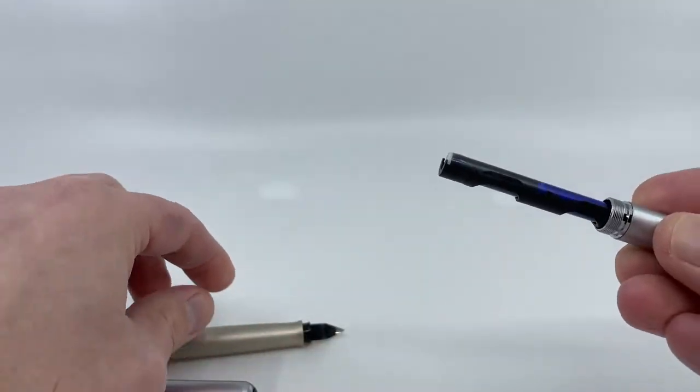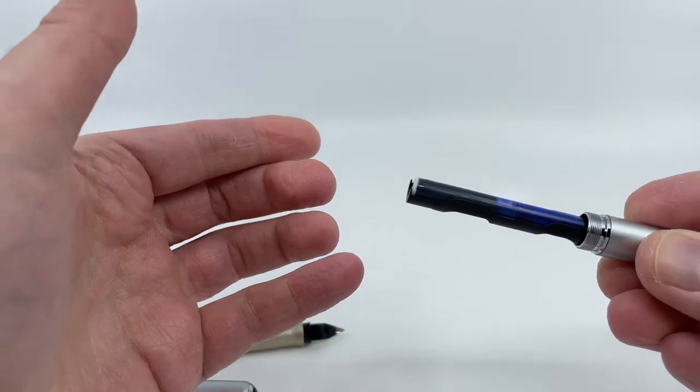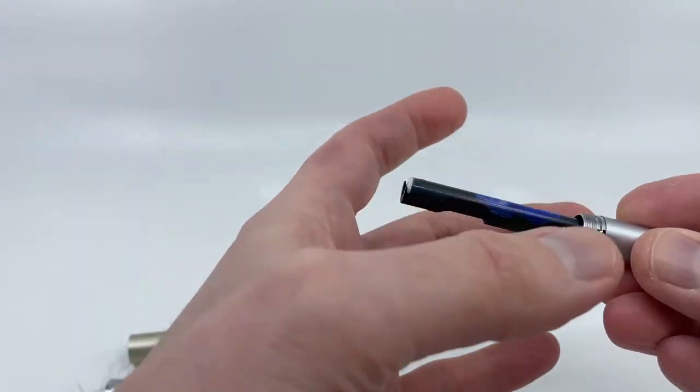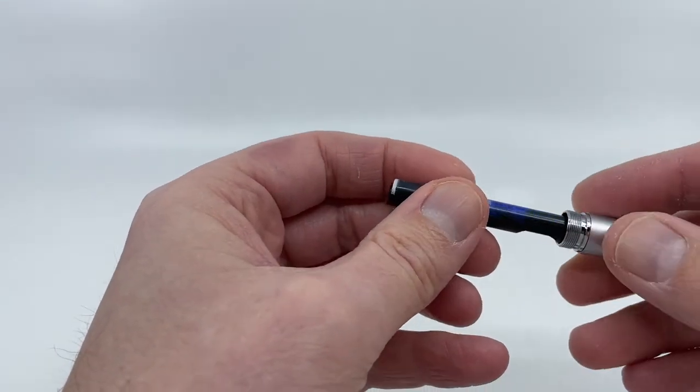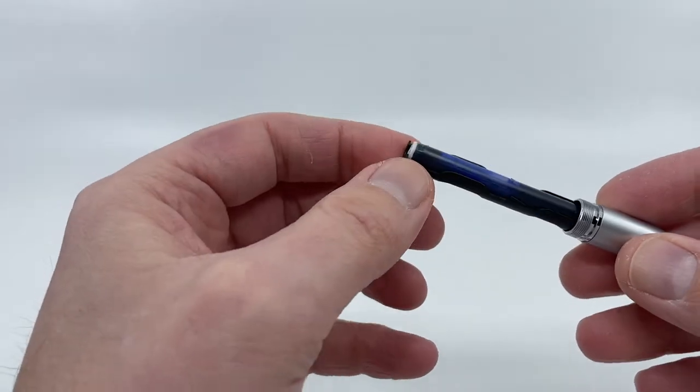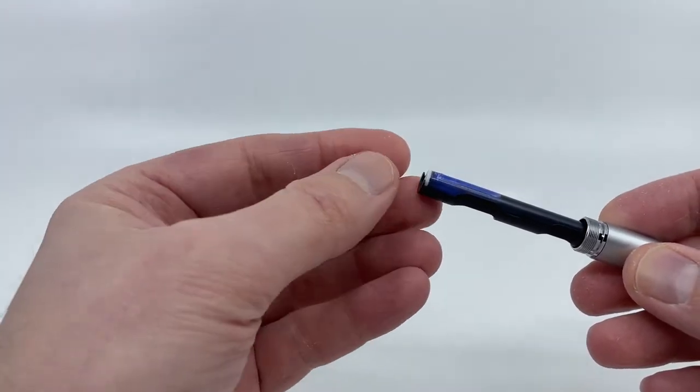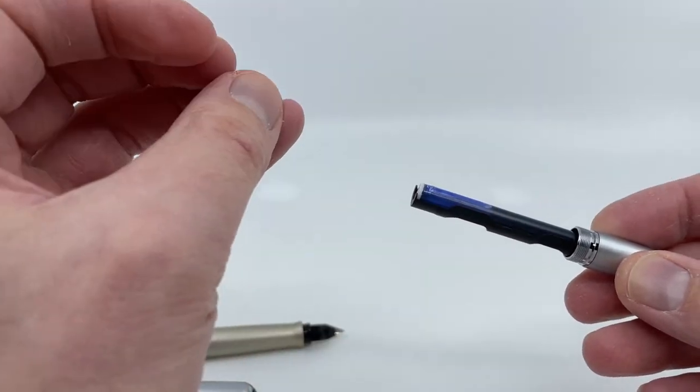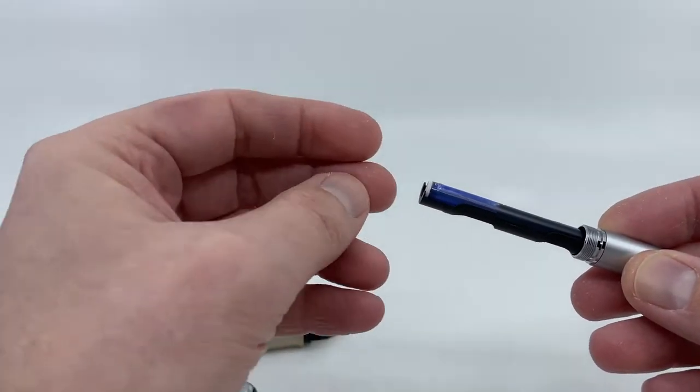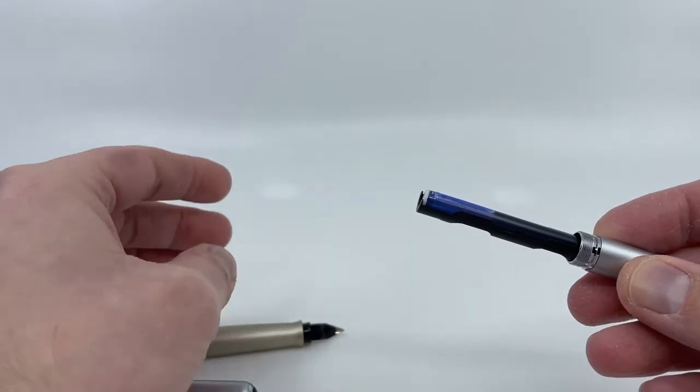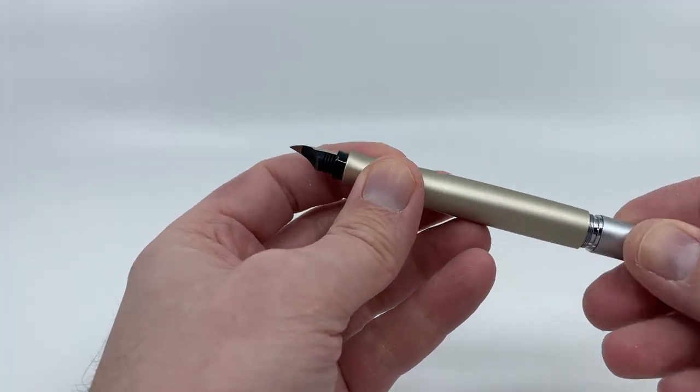One of the major drawbacks of this design is it's not really suited for a converter, because if you insert a converter in here, there's no way you can actuate the piston. So if you're going to use a converter, a standard C499 Pelikan converter will fit. It just is a matter of you'd have to fill it from the barrel first or from the bottle first, or fill it with a syringe prior to inserting it.